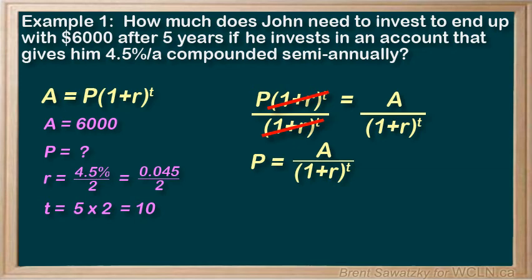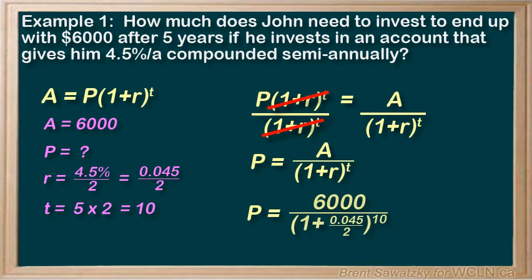We're ready to plug in our numbers. P equals 6,000 over (1 plus 0.045 over 2), all to the power of 10. Using our calculator, we come out with $4,803.06, rounded to the nearest cent.